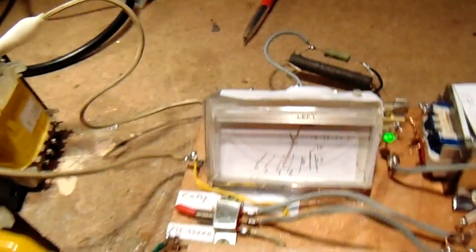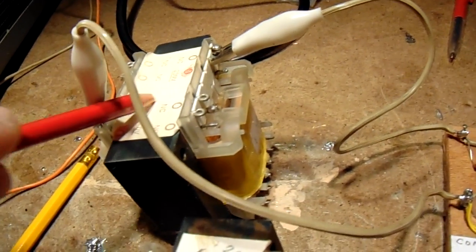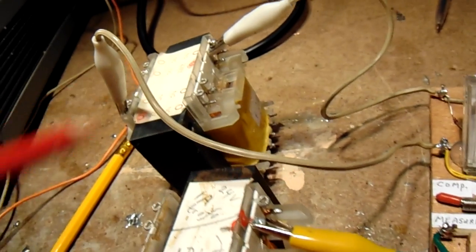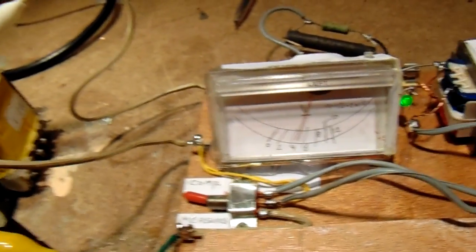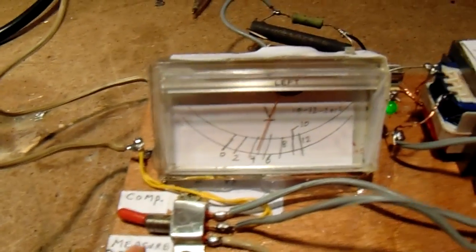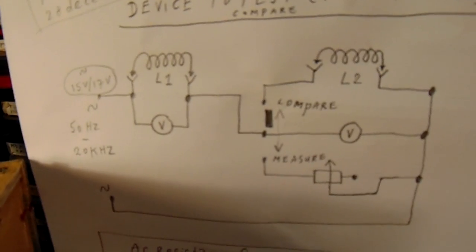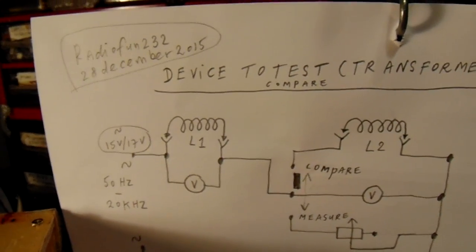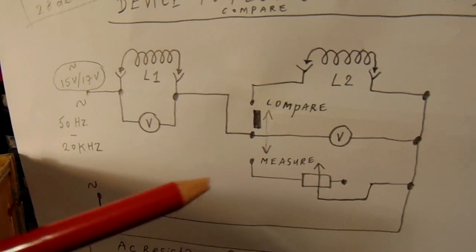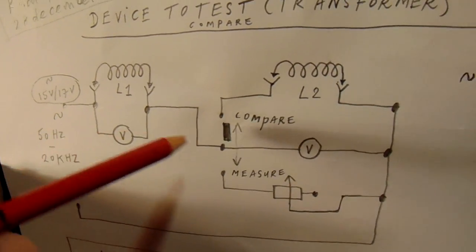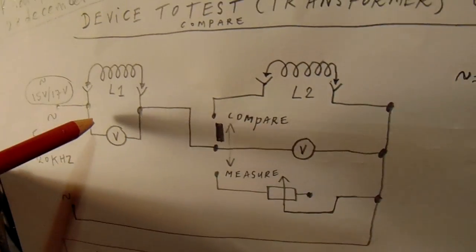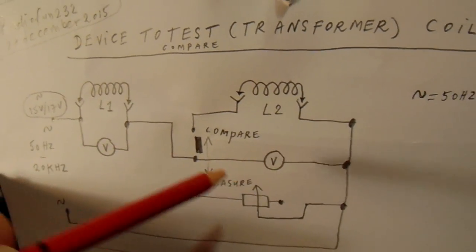I want to demonstrate now. Here I have two transformers, 230 volts to about 20 volts secondary, and I'm comparing them now by this circuit. The switch is now in the compare position, and I measure the voltage parallel to these two identical transformers.